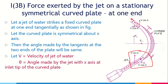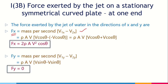The velocity of water before striking in the x-direction is V cosθ. The velocity after striking in the x-direction is also V cosθ, but in the opposite direction, so it is −V cosθ. Therefore FX = ρAV(V cosθ − (−V cosθ)) = ρAV × 2V cosθ, giving FX = 2ρAV² cosθ.